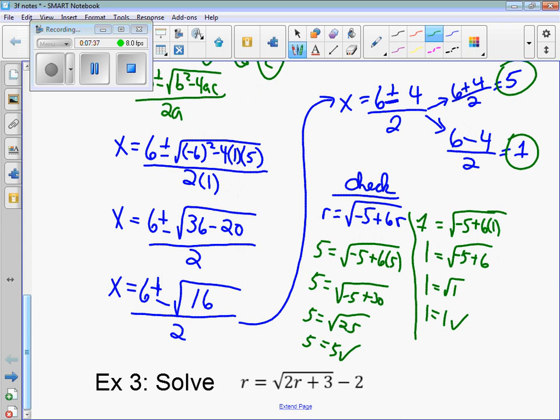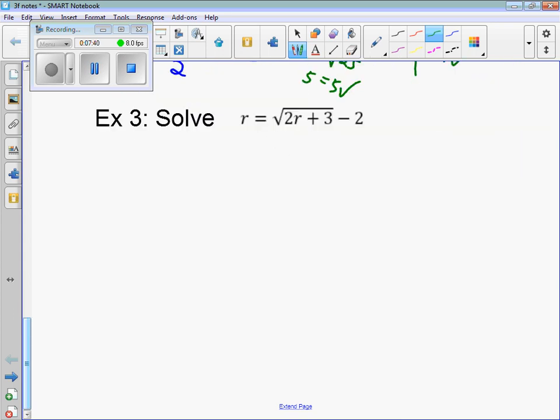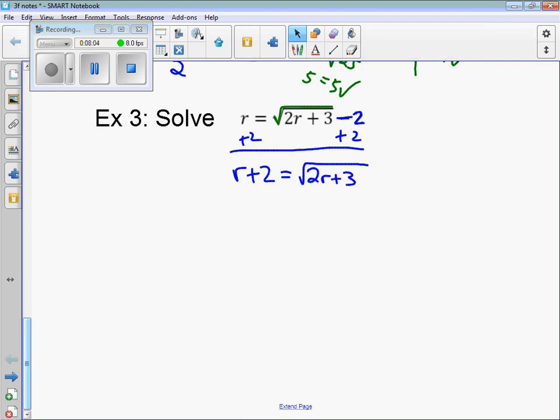And one last problem. So for this problem, that square root is not isolated. There is a subtract 2 on the outside of that square root, so we need to move it first. Add 2 to both sides. 2 and r are not like terms, so I've got to put those next to each other. So now the problem is we have a square root. When you square the square root, you're good, that cancels it. But on the right side, you have r plus 2 squared. So what r plus 2 squared means is times itself, that's r plus 2 times r plus 2.